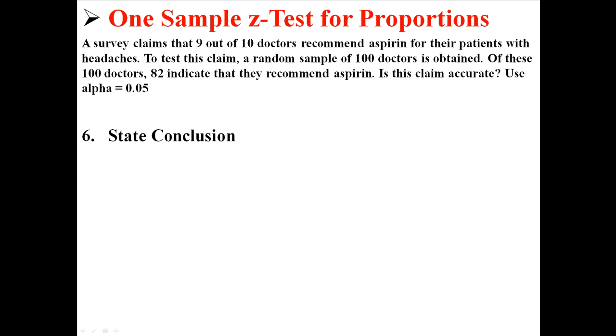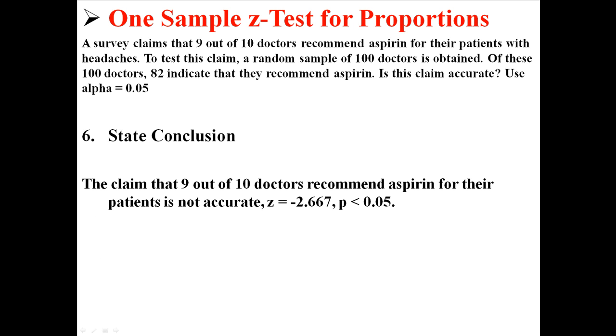Now we're going to state the conclusion. By rejecting the null hypothesis, what we're saying is that the claim that 9 out of 10 doctors recommend aspirin for their patients is not accurate. That null hypothesis is not true. The alternative is that 9 out of 10 is not true. It must be something different. In this case, it looks more like 8 out of 10. It's definitely not 9 out of 10.